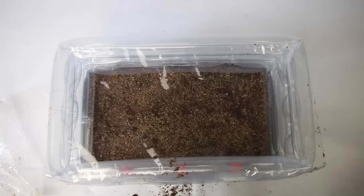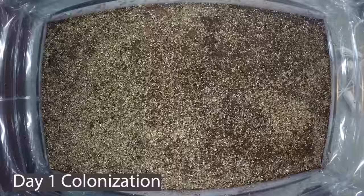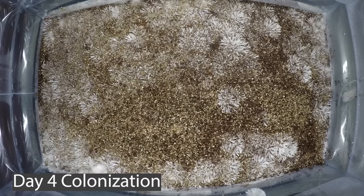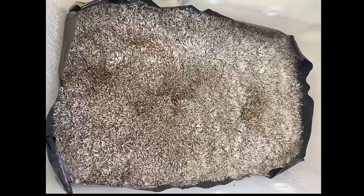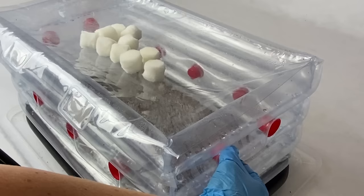Then, close the lid and plug all of the holes with the red filters. You can plug the holes in the beginning, I just forgot to do this in the video. Next, wait for the tub to fully colonize. You don't need to do anything during this time. Now, we need to watch the tub daily to see how fast it's colonizing.